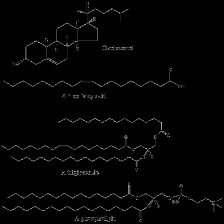Sphingolipids are a complicated family of compounds that share a common structural feature: a sphingoid base backbone that is synthesized de novo from the amino acid serine and a long-chain fatty acyl-CoA, then converted into ceramides, phosphosphingolipids, glycosphingolipids, and other compounds. The major sphingoid base of mammals is commonly referred to as sphingosine. Ceramides are a major subclass of sphingoid base derivatives with an amide-linked fatty acid. The fatty acids are typically saturated or mono-unsaturated with chain lengths from 16 to 26 carbon atoms. The major phosphosphingolipids of mammals are sphingomyelins, whereas insects contain mainly ceramide phosphoethanolamines and fungi have phytoceramide phosphoinositols and mannose-containing headgroups. The glycosphingolipids are a diverse family of molecules composed of one or more sugar residues linked via a glycosidic bond to the sphingoid base. Examples of these are the simple and complex glycosphingolipids such as cerebrosides and gangliosides.